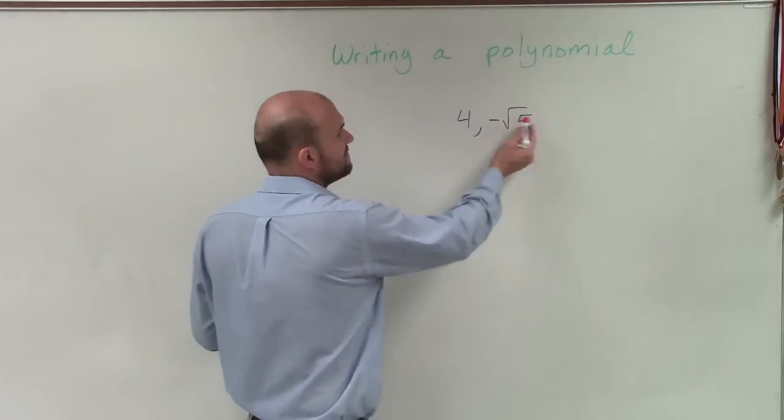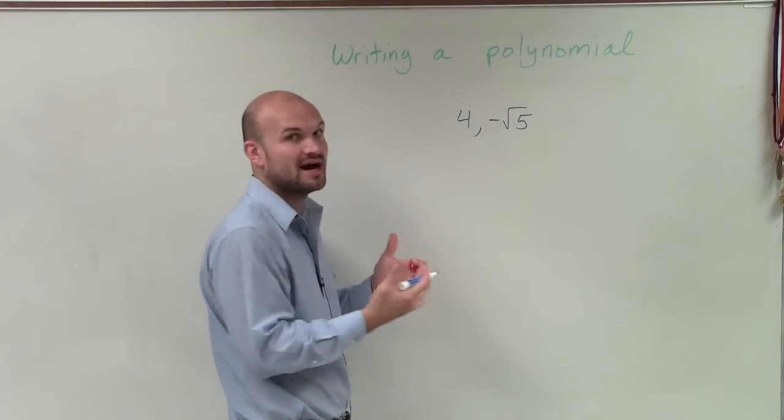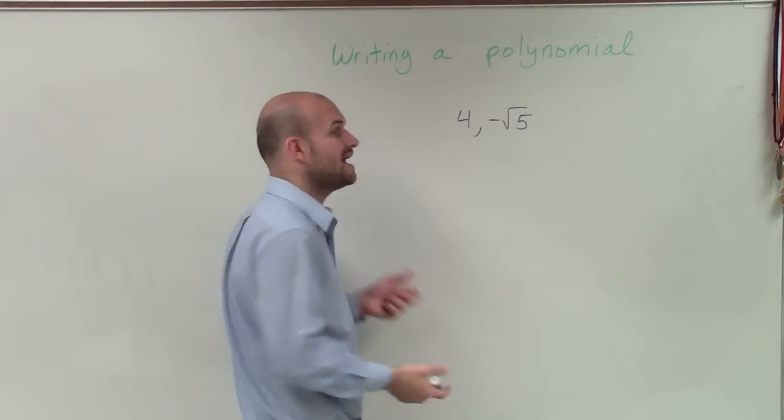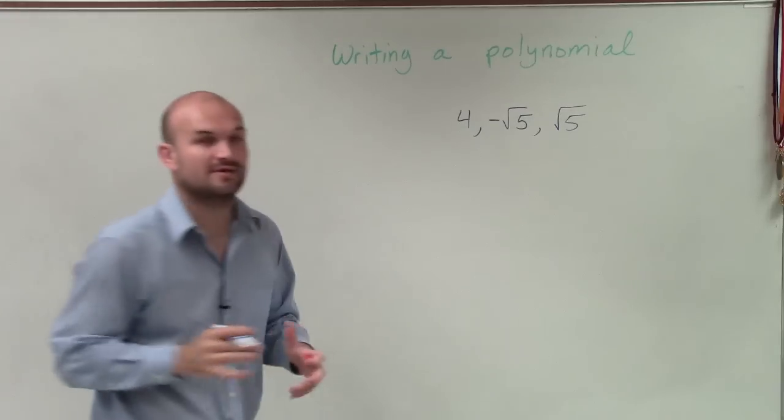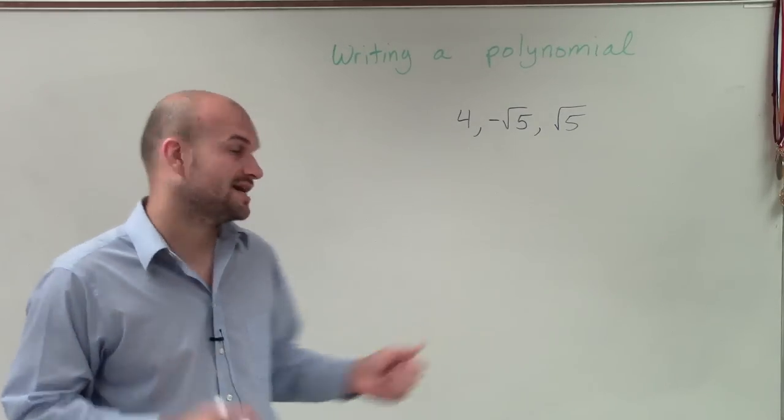So therefore, if I have negative square root of 5, we got to this by taking the square root of 5. So we have to include the negative and the positive version of the square root of 5. We have to make sure we can complete that conjugate.